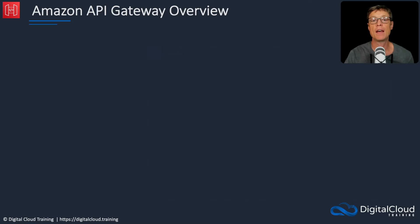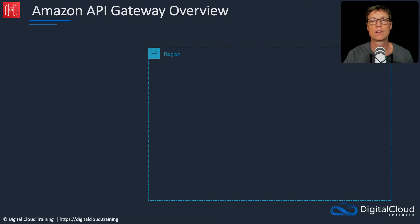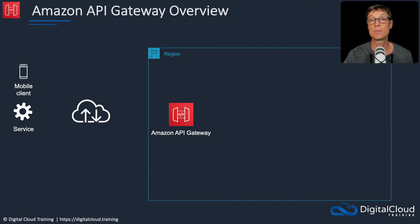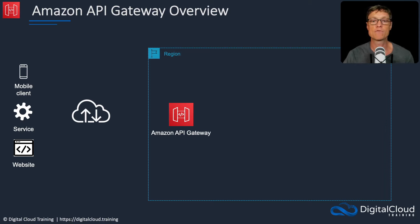Let's have a look visually to see how an API deployed through API Gateway actually works. Here we have a region and we've deployed an API of some sort. There's the internet, and we have various different clients — those clients could be an application running on a mobile device, a service running somewhere on the internet, or some kind of website or web application. Those services need access to some business logic or some kind of service running on AWS, and they'll do so by connecting to the API.